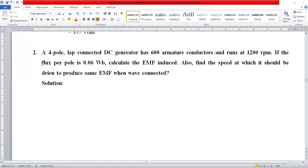Here is another example. A 4-pole lap connected DC generator. In the case of lap connected generators, the number of conductors per parallel path equals the number of poles. So P equals 4 and A equals 4. It has 600 armature conductors, so Z equals 600.